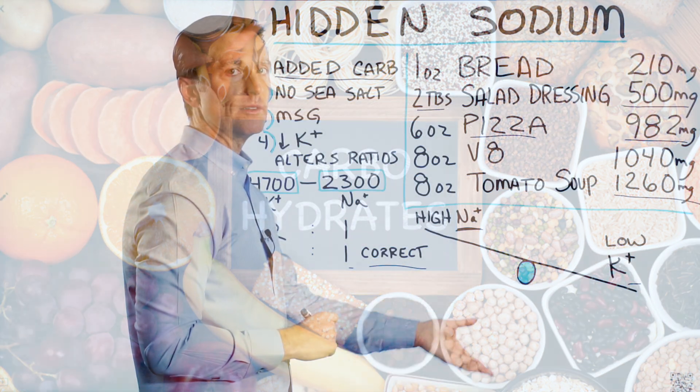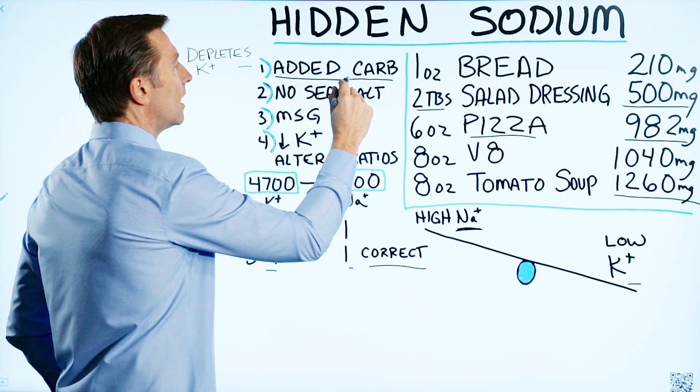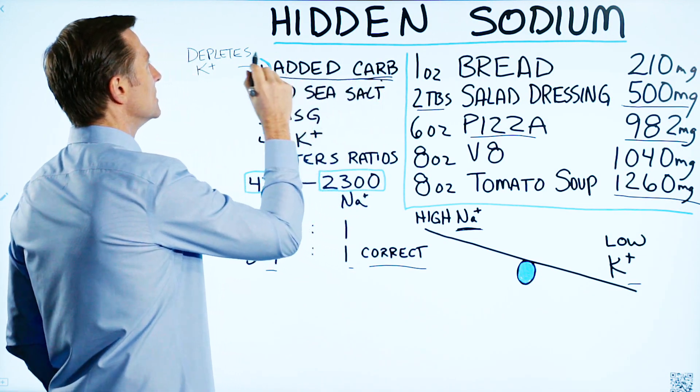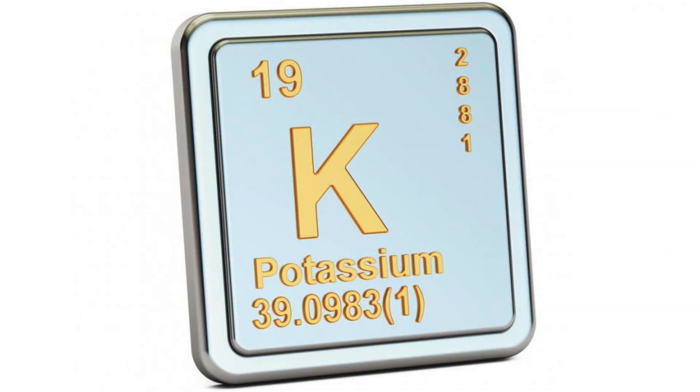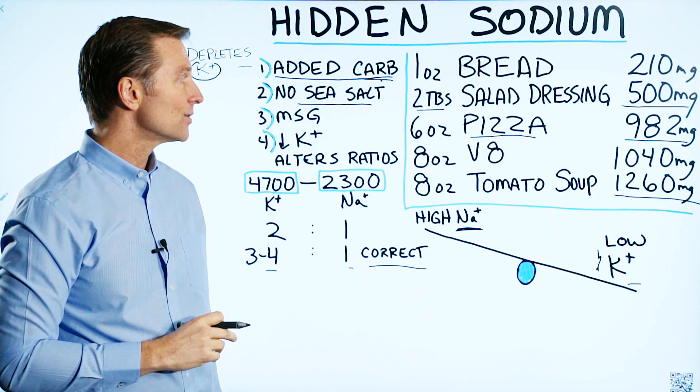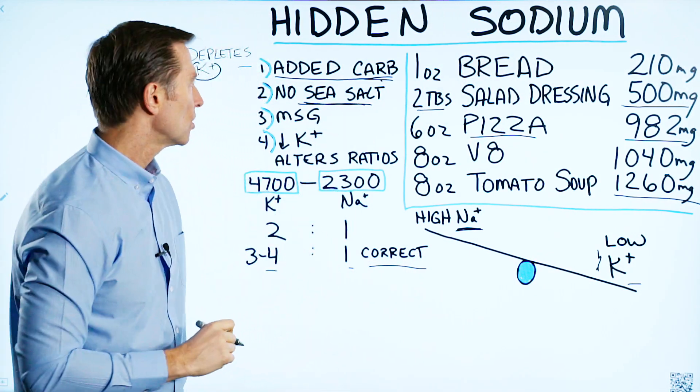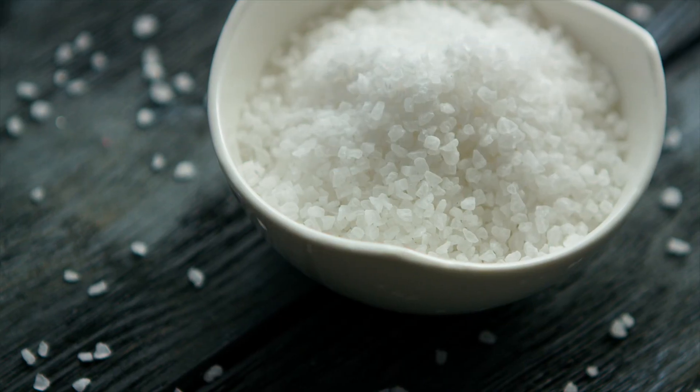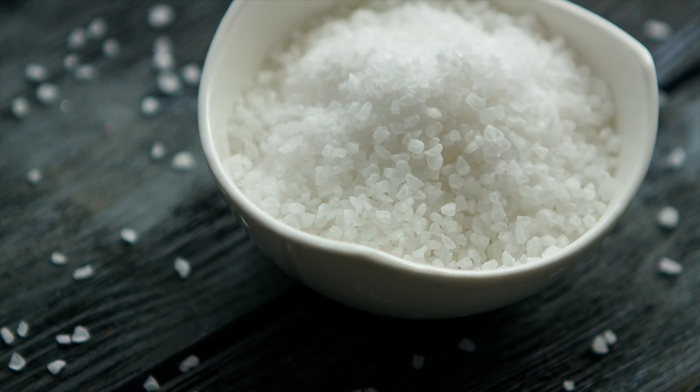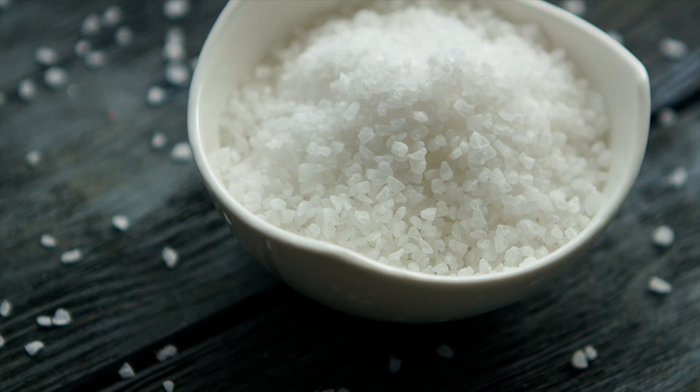Not only do we have more sodium, we have more carbs, and the carb depletes potassium. Plus, the sodium they use in carbohydrates is not in the form of sea salt. It's in the form of sodium chloride, so you don't have all the other minerals involved. Sea salt has 84 minerals. Table salt has two.